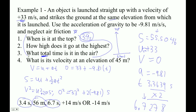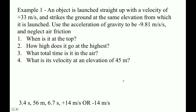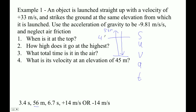And then the final question here requires another SUVAT. What is its velocity at an elevation of 45 meters? So I'm going to erase all these things and re-SUVAT. Now we are going from the ground — we know the highest point is about 56 meters — it goes up and it goes down, and we're looking at it at 45 meters.